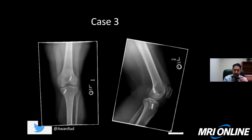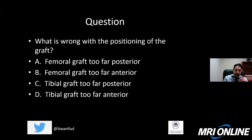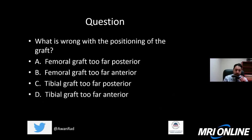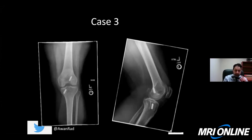Question number three: this is a patient that's had an ACL repair, as you can see with the interference screws, and there is an abnormality. We have AP and lateral radiographs of the knee. What's wrong with the positioning of the graft? Is it that the femoral graft is too far posterior, the femoral graft too far anterior, the tibial graft too far posterior, or the tibial graft too far anterior?